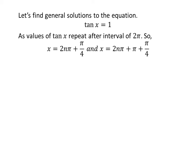Let us find the general solutions. As we know, the values of tangent of x repeat after an interval of 2 times pi. So the general solutions are 2 times n times pi plus pi upon 4, and 2 times n times pi plus pi plus pi upon 4, where n is an integer.